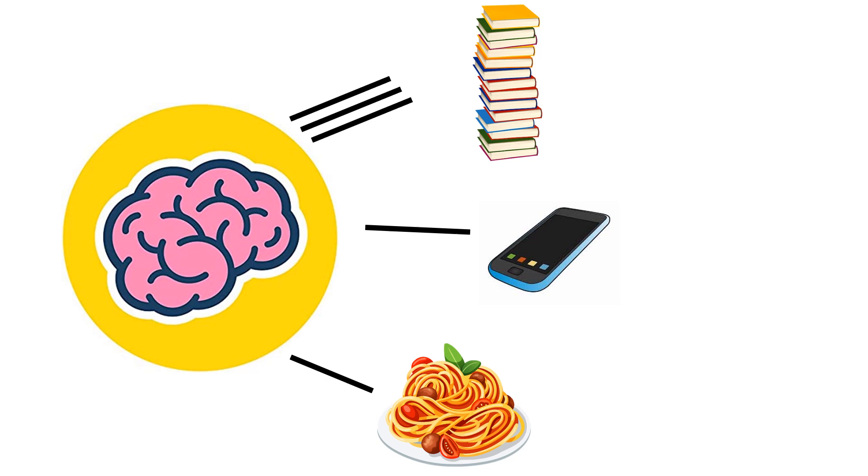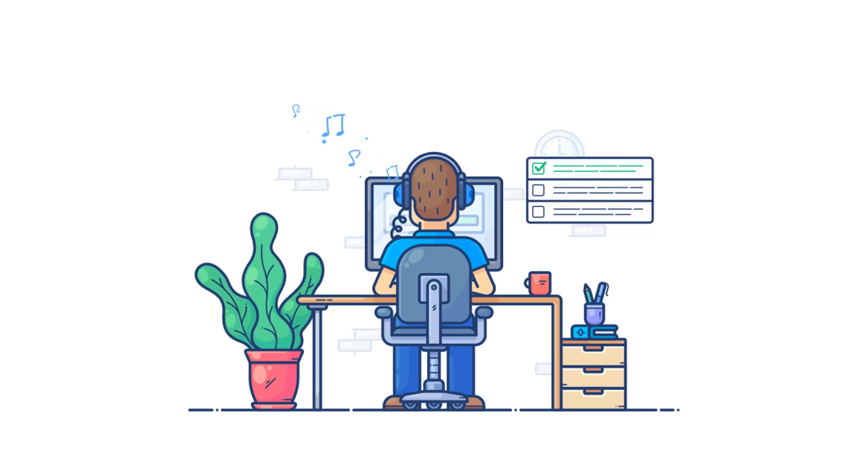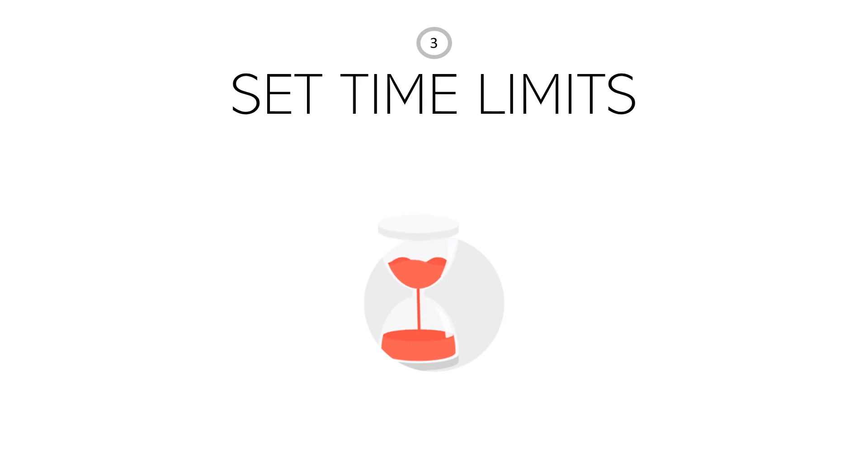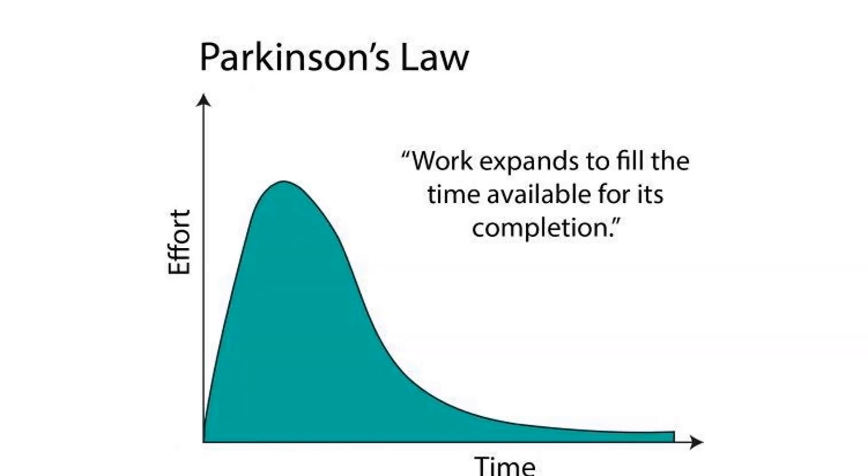So in order to have a productive work session and to have maximum focus, we need to remove all external stimuli that could tamper with your concentration. Tip number three is to set time limits. According to Parkinson's law, work expands to fill the time available for its completion. Therefore, we need to divide and conquer and set time limits and work in those time limits.